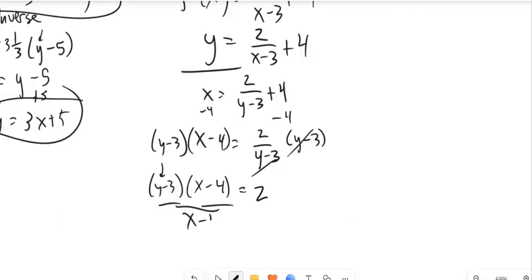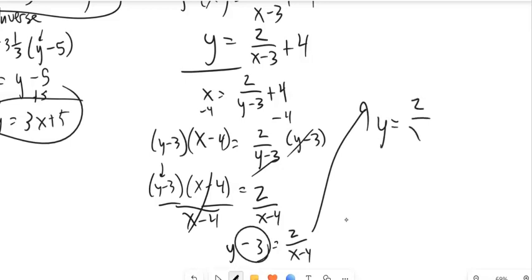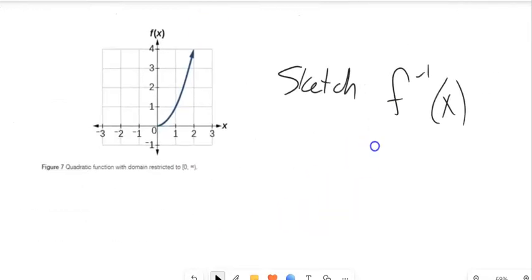Yeah, I like that. So y minus 3 equals 2 over x minus 4. Add 3 to both sides. All right, here's one more that I want to do.